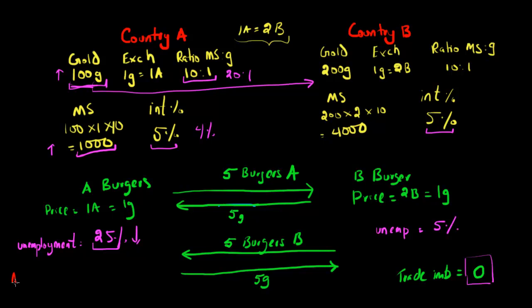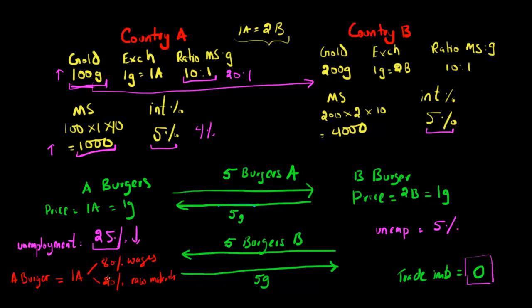Let's look at one Country A burger that sells for one Country A dollar. There are different components of its production cost: 80 percent of the cost is in wages and 20 percent is raw materials — the actual food going into the burger. So if you wanted to make Country A burgers cheaper, you could try decreasing raw material costs or decreasing wages, allowing you to sell more Country A burgers.